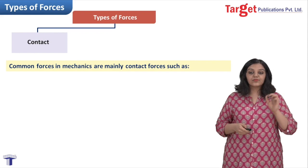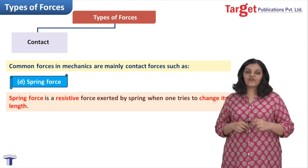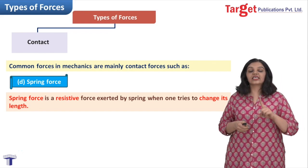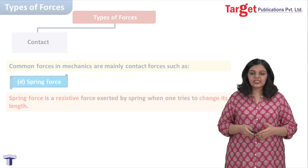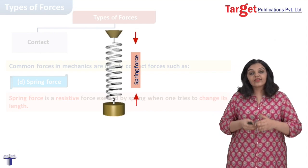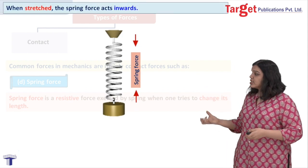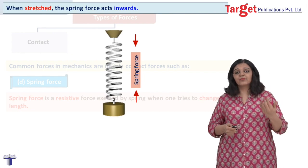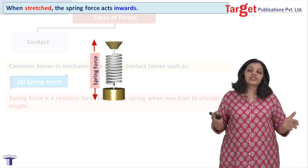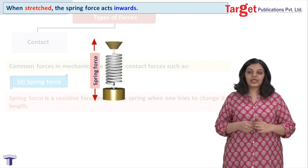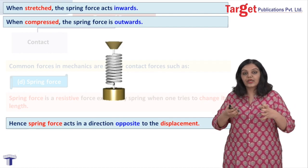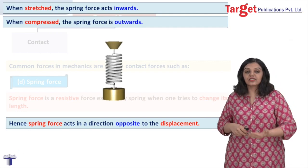The next type of contact force is the spring force — a resistive force. It resists a change in its length. A spring force is exerted whenever you try to change the length of a spring. If you try to stretch the spring, it tries to restore its length and the force exerted will be inwards. If you try to compress the spring, it will exert a force outwards to restore its length. So spring force always acts in a direction opposite to that of displacement — you move it to the left, it tries to bring you back to the right, and vice versa.